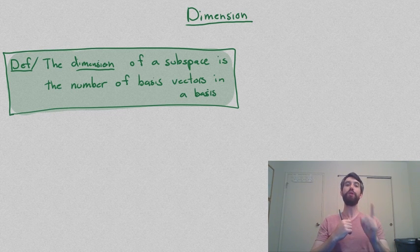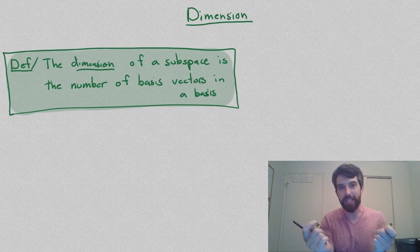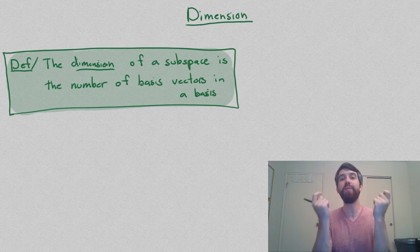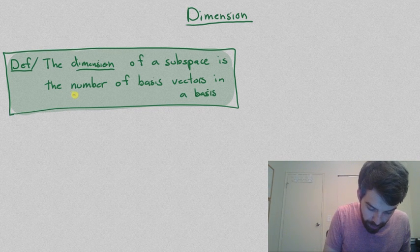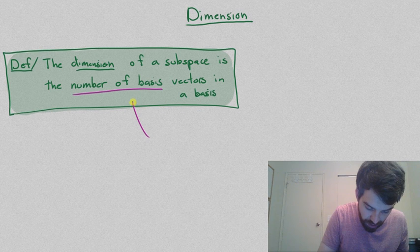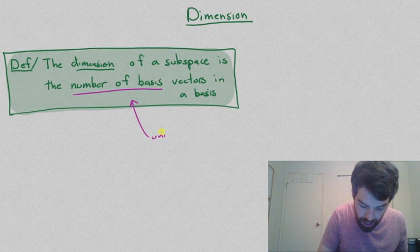However, I am going to assert it here as an incredibly important theorem. Every single basis has to have the same number of vectors if it's representing the same subspace. So, in other words, this number of vectors that we have here, this is going to be unique.